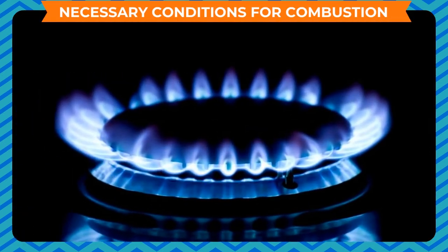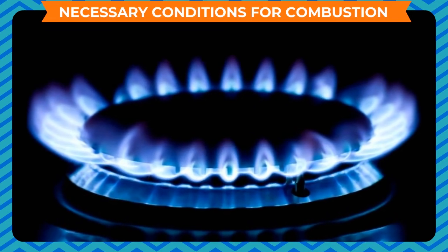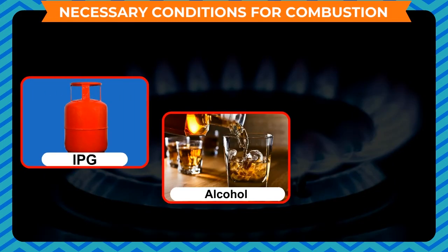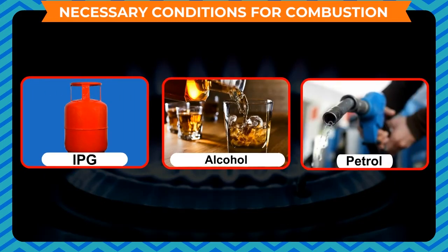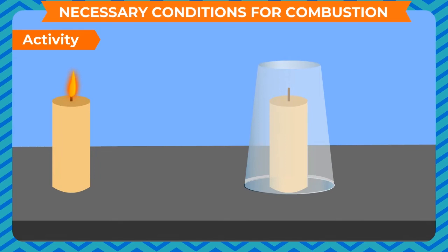There are some substances which have a very low ignition temperature and catch fire easily with a flame. Such substances are said to be inflammable substances. Some inflammable substances are LPG, alcohol, petrol, etc. To show that air is a supporter of combustion, light a candle and cover it with a glass tumbler. You will find that the candle stops burning after a while. This activity shows that air is necessary for combustion.